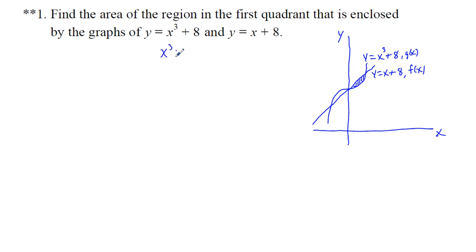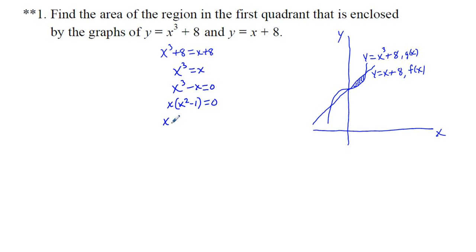We have x cubed plus 8 is equal to x plus 8. Solving, if we subtract 8 from both sides, we have x cubed equals x. Subtracting x, we have x cubed minus x equals 0. Factoring out an x, we have x times the quantity x squared minus 1 equals 0. So x equals 0, and also x equals plus or minus 1. We are interested in the area between 0, which we call the a value, the lower limit, and 1, which we call b.